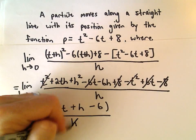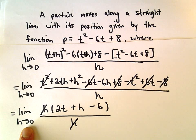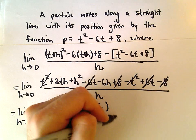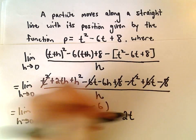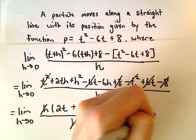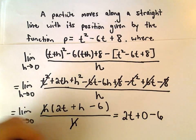So if we cancel, and now we can plug in h equals 0, that'll leave us with 2t plus 0 minus 6.